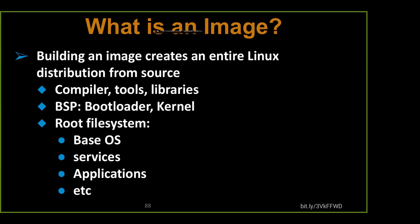For a QEMU image the BSP gets built one time and you never have to do it again. You're also going to build the root filesystem - the base OS, whether you're building with glibc, musl, or another C library. Then you build the services: do you need a web server, SSH, curl? And on top of that, any applications - for example, you may need to build Qt as part of those libraries required for your application.